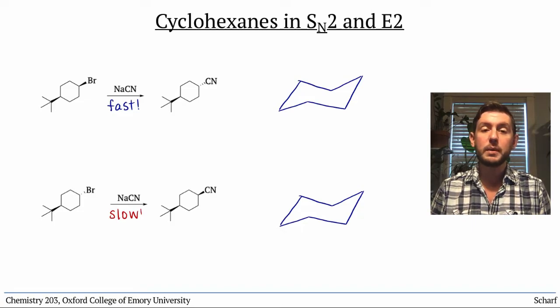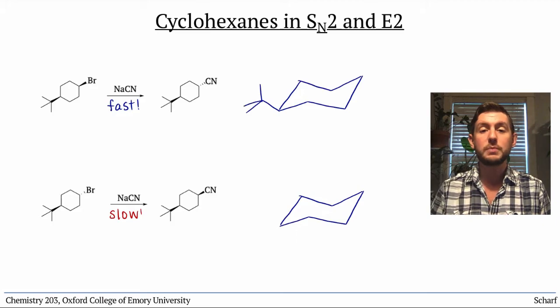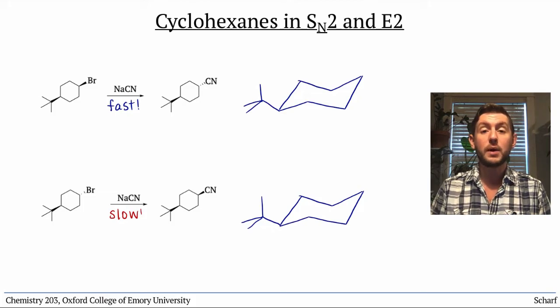Let's first remember that tert-butyl groups are locking groups. They have very strong preferences for being equatorial, so we'll start by placing those t-butyl groups in the equatorial positions. Notice that they're on wedged bonds in our structures, so they must be angling upward in our chairs.